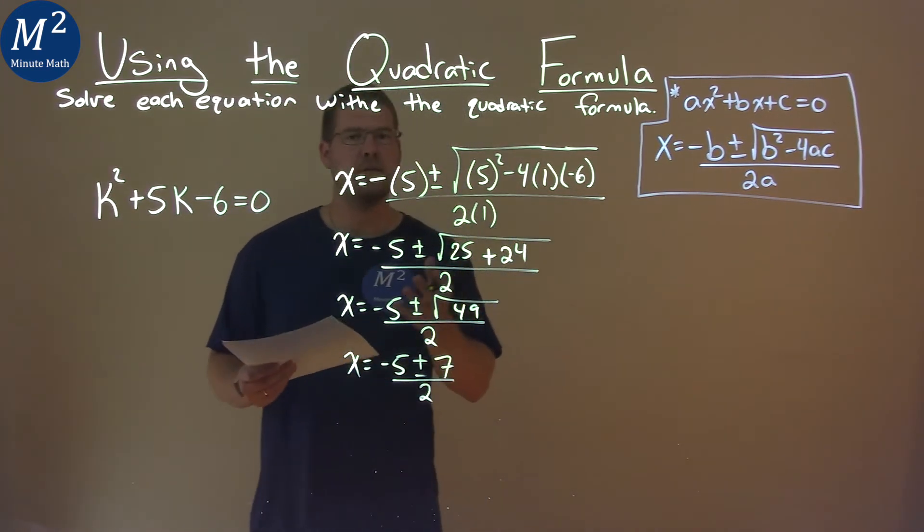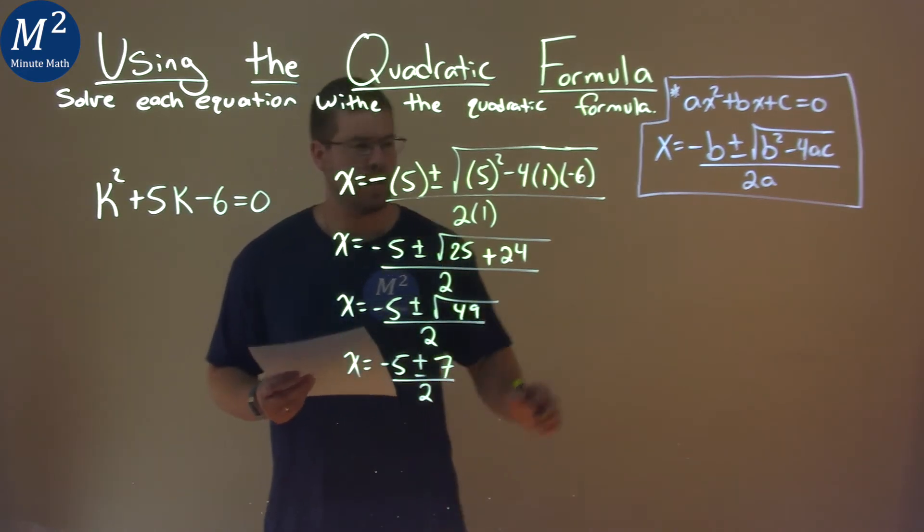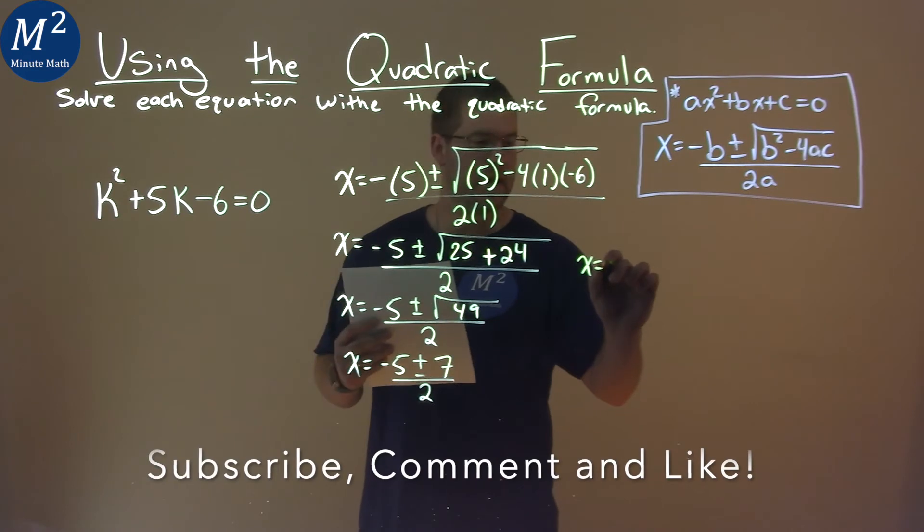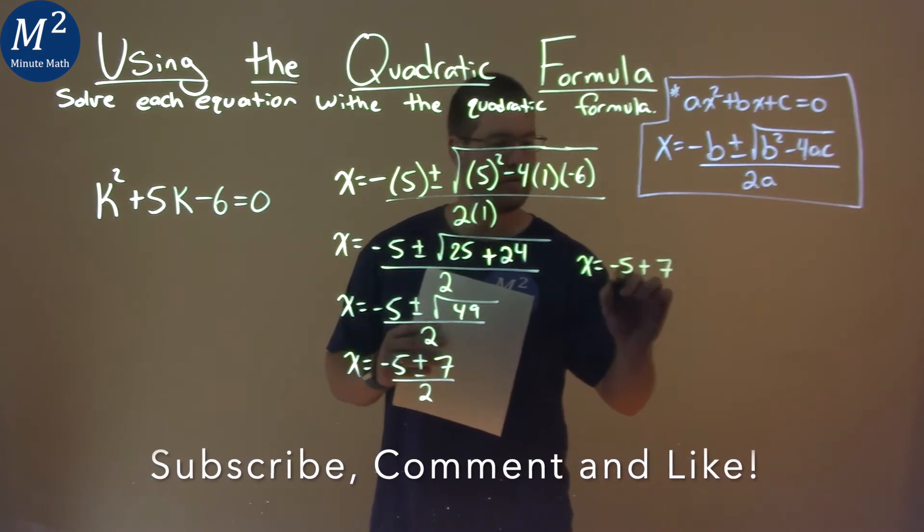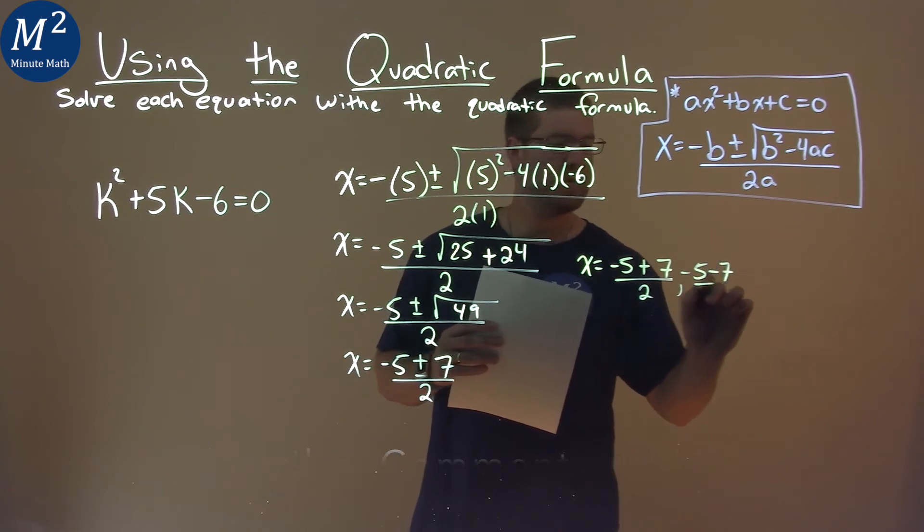At this point I like to break this down into two parts. We have a plus and minus here. So x equals negative 5 plus 7 over 2, and negative 5 minus 7 over 2.